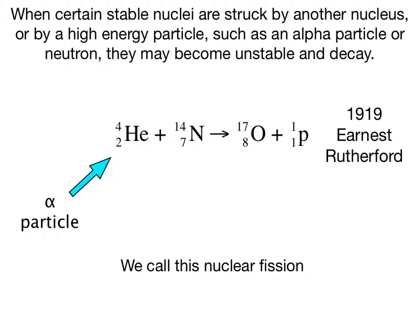While there are many unstable isotopes of elements which will spontaneously decay, in 1919 Ernest Rutherford discovered that it's possible to cause a stable nucleus to become unstable and decay by striking it with another nucleus or a high-energy particle, such as an alpha particle. So in this equation, we have an atom of nitrogen-14, which is stable, and we hit it with a high-speed alpha particle. And what happens is the nitrogen-14 transmutates into oxygen-17, and it gives off a proton.